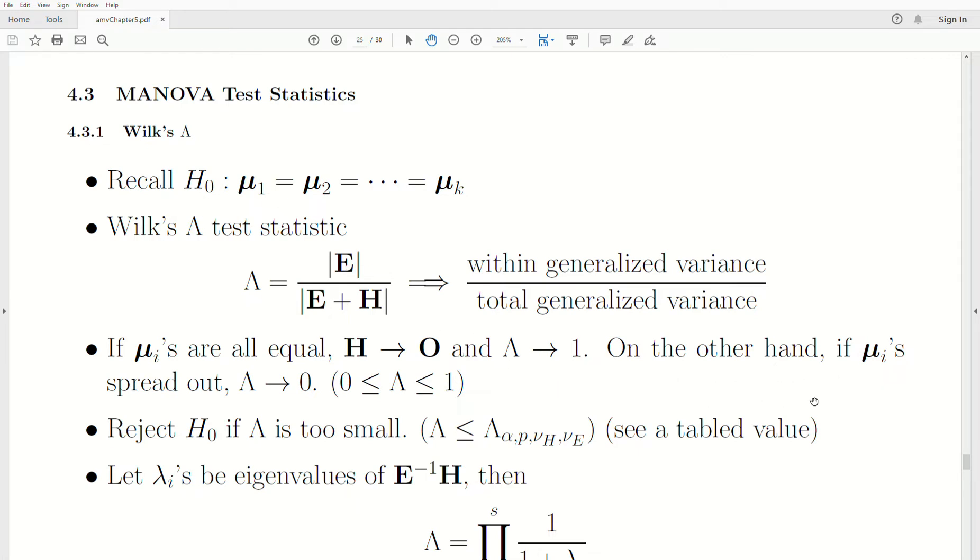On the other hand, if the mu's are spread far apart, then this value goes to zero. And so we reject the null hypothesis if lambda is too small. And so there's a critical value, and they're tabled in some books, some multivariate book that you have to look up. And it's derived off P, which is how many parameters we have in our vector, how many variables, and then the degrees of freedom associated with H, degrees of freedom associated with E. That's a Greek letter nu.